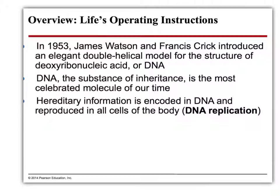How did we get to understanding that DNA is the genetic material? Because what are chromosomes made of? Going back to the 1800s, we have Mendel talking about traits, and Morgan understands that genes are on chromosomes. Up to this point, chromosomes are made up of proteins and nucleic acids. So the genetic material could be proteins or it could be nucleic acid — we didn't know yet. We're going to figure that out, and then figure out the structure of that genetic material.